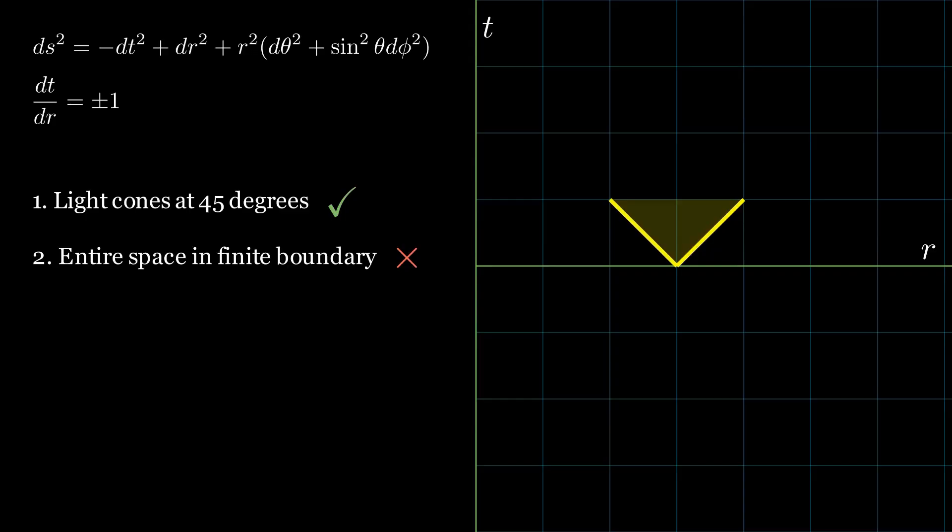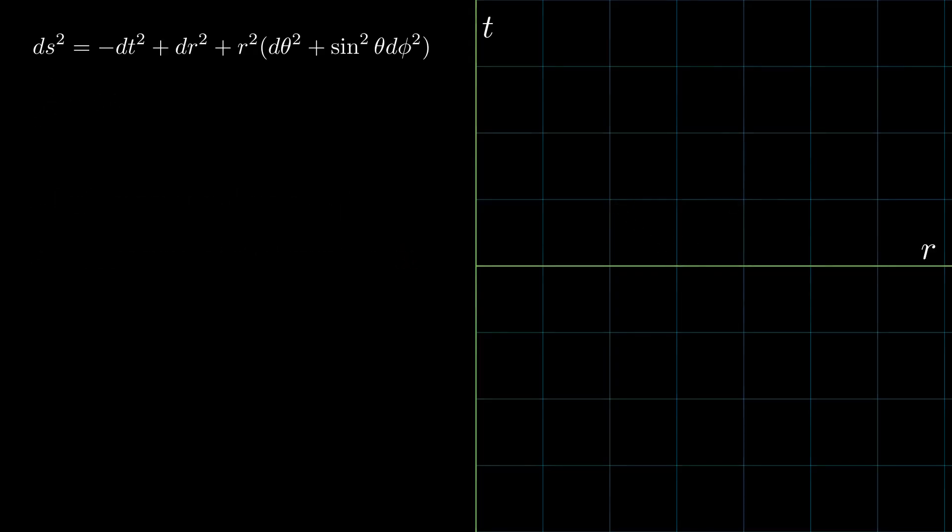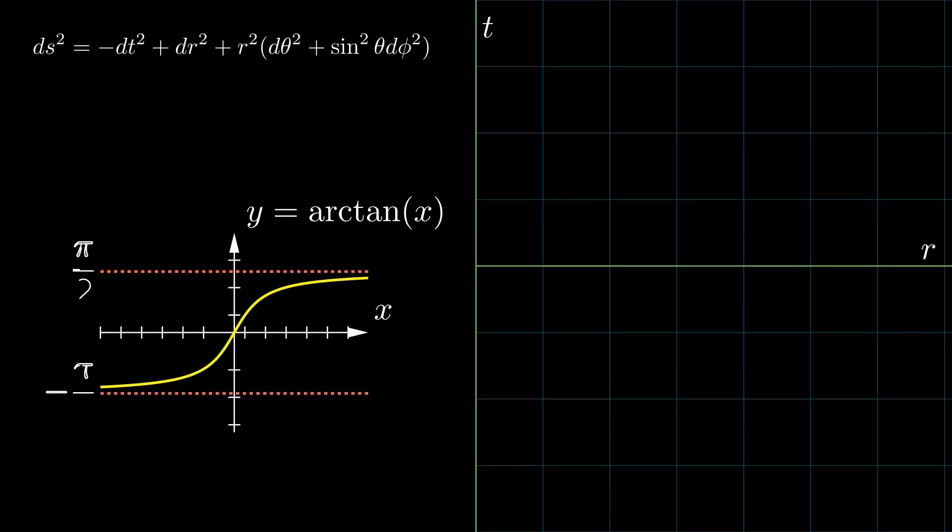One way we might approach this problem is using the arctan function. It takes an input that ranges from minus infinity to infinity and gives a corresponding value that is bounded to a range. Let us now apply this function to our time and radial coordinate. We denote the rescaled coordinates with a bar.